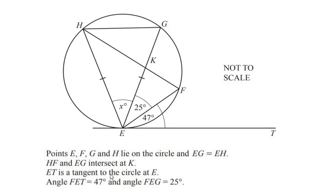Hello and welcome to my channel. In this video we are going to solve an example on circle theorems. Points E, F, G, and H lie on the circumference of the circle, and EG is equal to EH. HF and EG intersect or meet at point K, and ET is a tangent to the circle at point E.